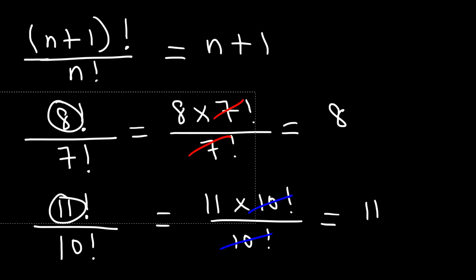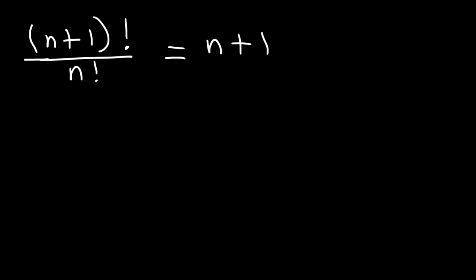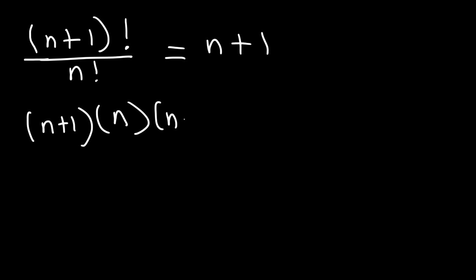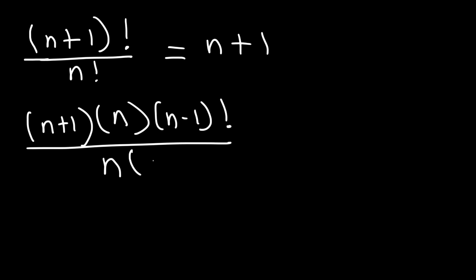But now let's see if we can get that same answer algebraically. So (n+1) factorial is going to be (n+1), and then 1 less than n+1 is n, and 1 less than n is n minus 1, and it just keeps going. Now n factorial is going to be n, and then 1 less than that is n minus 1, and that keeps going too. So we can cancel n minus 1 and we can cancel n, and we're going to be left with simply n plus 1. And that's the answer.